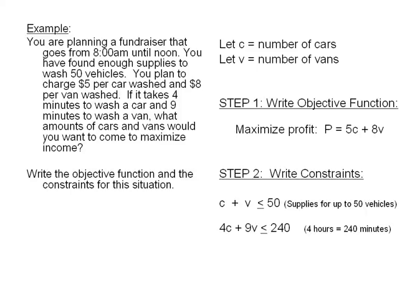In this particular problem, there are two hidden constraints as well. Since we are working with cars and vans, we know that these variables must have positive values. We cannot have a negative number of cars nor a negative number of vans. Therefore, C is greater than or equal to 0 and V is greater than or equal to 0.